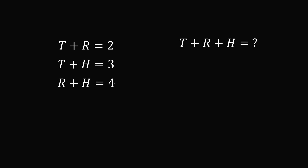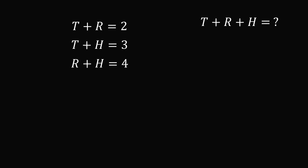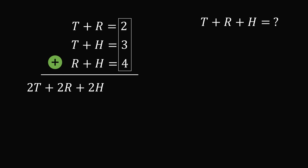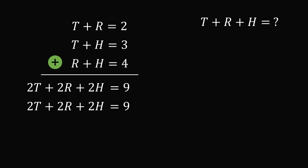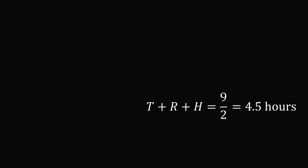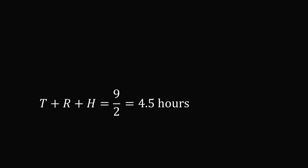Here's how they solved it. You have a system of equations and you want to solve for the sum of the three variables. A clever trick is to add up all three equations. Notice we have two terms of t, two terms of r, and two terms of h. So this will be 2t plus 2r plus 2h equal to the sum of 2, 3, and 4, which is 9. We want to solve for t plus r plus h, so we factor out the 2: 2 times (t plus r plus h) equals 9. Dividing both sides by 2 gives t plus r plus h equals 9 over 2, or 4.5 hours. That's the answer many students put down — it took all three of them four and a half hours to do the job.